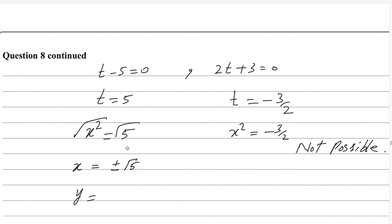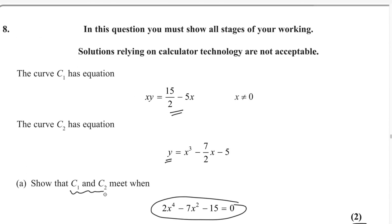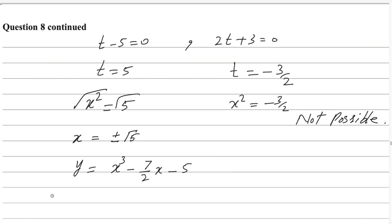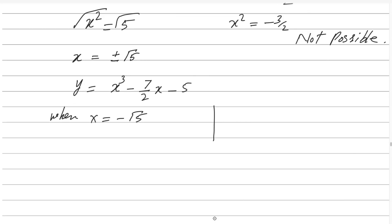Now we find the Y values by substituting these X values into the equation Y equals X³ minus 7 over 2 X minus 5. We substitute X equals minus square root 5 and X equals positive square root 5 to get the coordinates of P and Q. For X equals minus square root 5: Y equals (minus √5)³ minus 7 over 2 times (minus √5) minus 5.